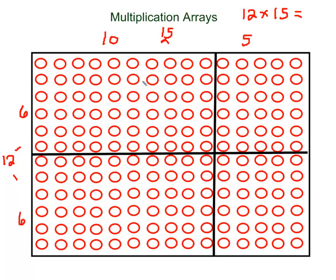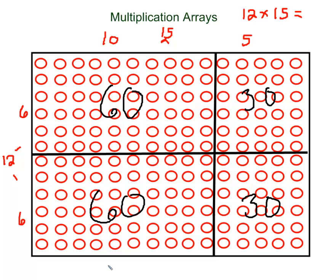Now if I look closely, the numbers I have for rows and columns are numbers I can do in my head. So if I have 6 rows of 10, that is 60. 10 times 6 is 60, so I have 60 pieces there. Over here I have 6 rows of 5 — 6 times 5 is 30. Down here I have 6 rows of 10 — another 60. And over here I have 6 rows of 5 — another 30. So: 60 plus 60 is 120, and 30 plus 30 is 60. Altogether I have 180 pieces inside here. So 12 times 15 is 180.